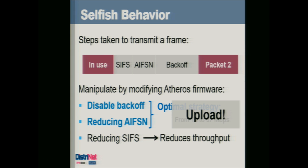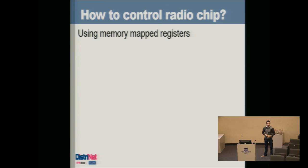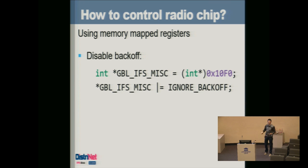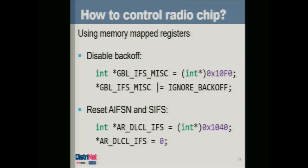How do we actually disable these parameters in practice? We have open-source firmware that controls the radio chip through memory-mapped registers. Disabling the backoff is surprisingly simple: you take the register holding the configuration for backoff behavior, set the correct bit, and you're done. Similarly, for the AIFSN timeout intervals, there is a register responsible for configuring those; you write the correct value and you're done. The only difficult part is finding where these registers are located.